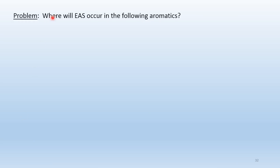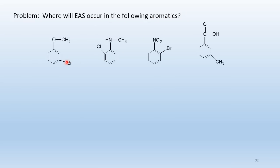Where will EAS occur in the following aromatics? (1) Meta-bromoanisole: anisole's methoxy group is an electron-donating, ortho-para-directing activator; the bromine is a deactivator — ignore it. The ether group directs ortho and para to itself. The site between the two meta-substituents is too hindered and would not be a substitution site.